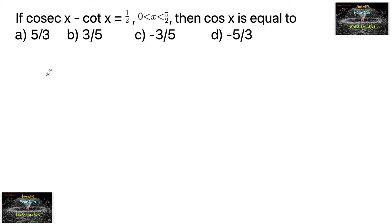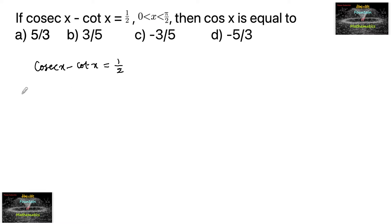If cosecant x minus cot x is equal to 1/2, where x lies between 0 and π/2, that is the first quadrant.